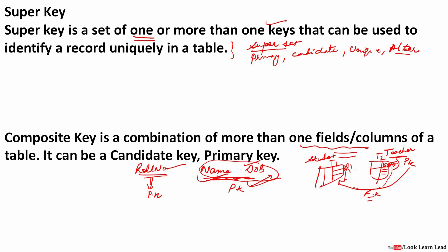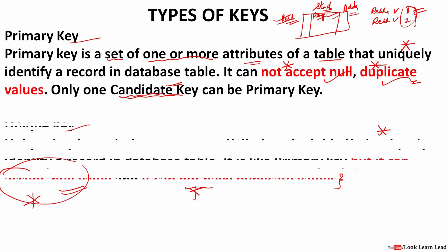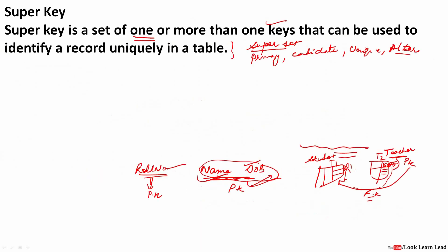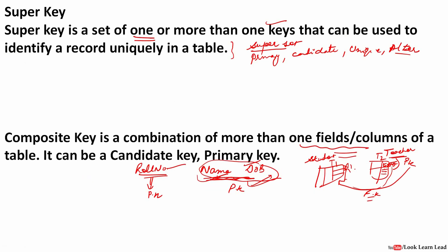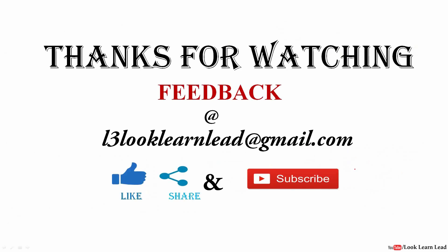So in total we covered seven keys: first is the primary key, second is the unique key, third is the alternate key, then we had the candidate key, then super keys, then composite keys, and finally the foreign key. This was all about the keys in database management systems. Hope you liked the video — if you liked it, please hit the like button, do share and subscribe. Thank you.